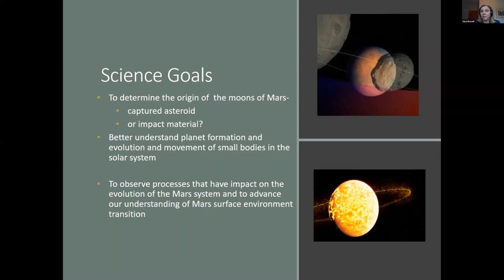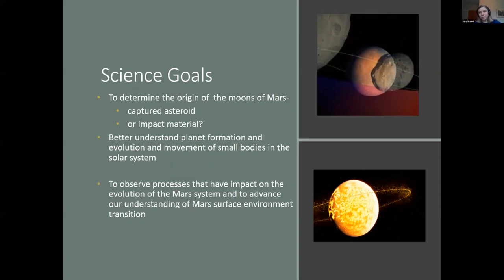The opposing theory is that Phobos and Deimos formed during an impact into very early Mars, which excavated the crust and mantle. It may have formed rings around Mars, with other moons that eventually collapsed back, leaving Phobos and Deimos as the two remaining ones. Finding out how these moons formed is a really important part of the mission — it will help us better understand planet formation and the movement of small bodies around the solar system.